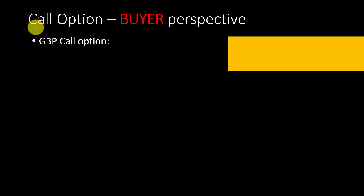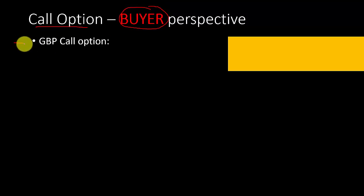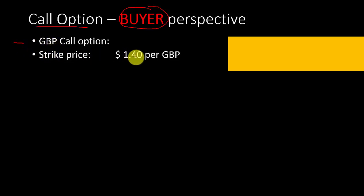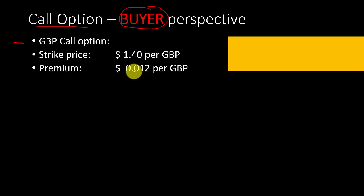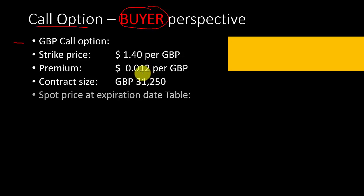For each kind of option we look at it from the buyer's perspective and then from the seller's perspective. The call option we analyze today is the pound call option with a strike price of $1.40 per pound, a premium of $0.012 per pound, and a contract size of 31,250 pounds.